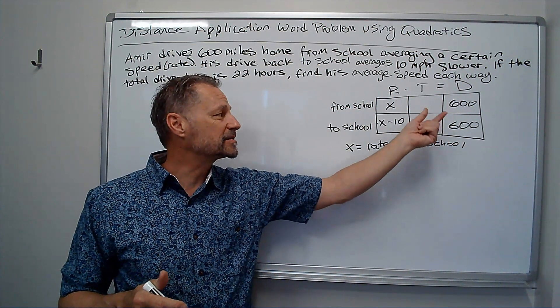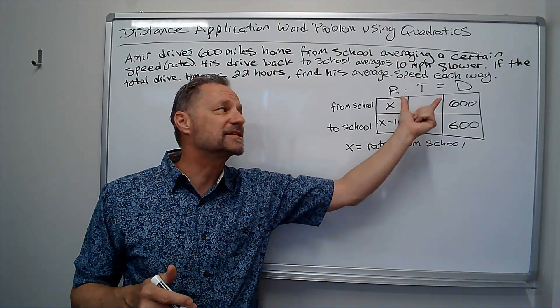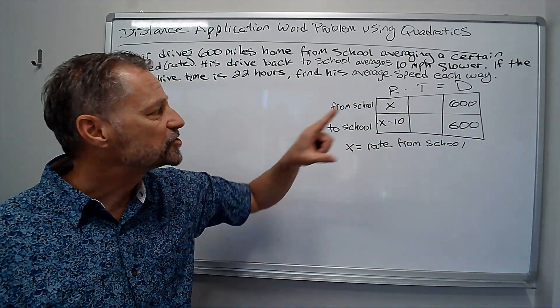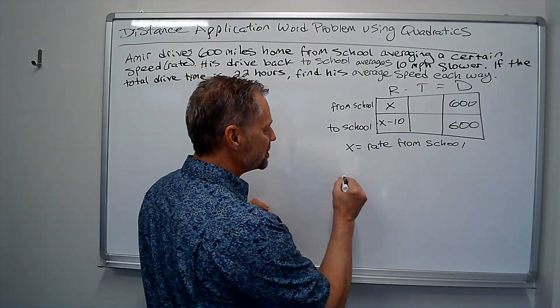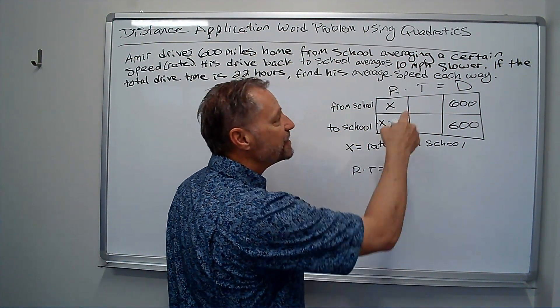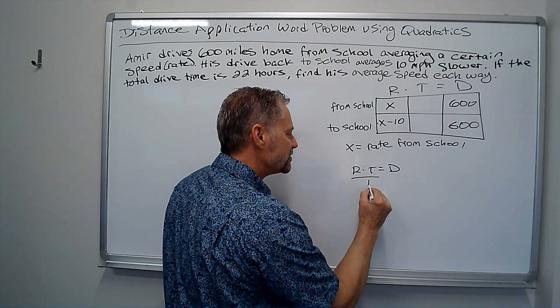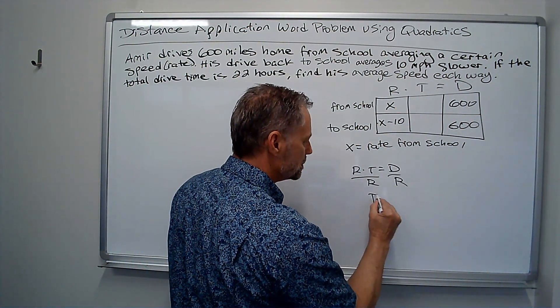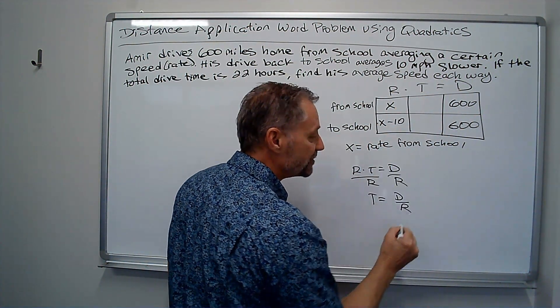So, we're going to use this formula to fill in that box. Always when we set up the box, one of the columns is going to come from the formula. I've got rate times time equals distance. If I want time, I have to divide by rate.